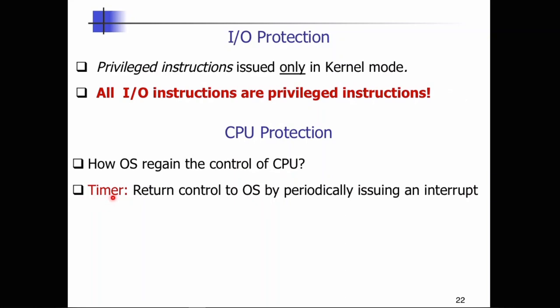We need a timer, and this can be arbitrary. A timer can return control to the OS by periodically issuing an interrupt. Whenever we get an interrupt, it's a privileged instruction, so we go to the kernel space, the operating system regains control, and only if it wishes to give control back to the CPU does it do so — then it restarts the timer. Imagine a countdown counter: when it expires, control is returned. That's how we ensure the user process doesn't hog all the resources and never give them back to other users or to the operating system.